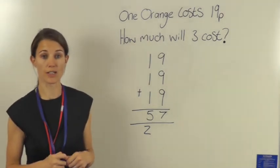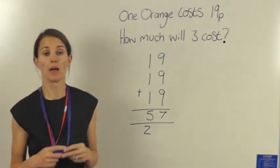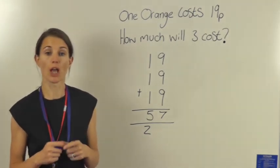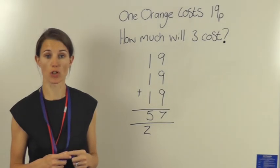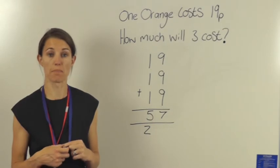But I need to remember that the question talked about money. My original question was how much would three oranges cost, so I need to remember that my answer needs to be an answer in money. So this isn't 57; the answer is actually 57 pence.